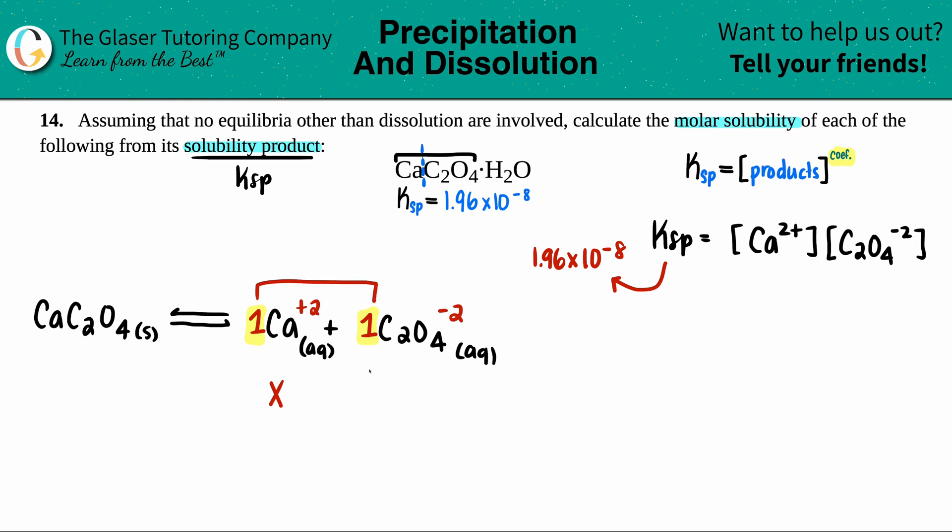And since it's a one to one ratio, that means that whatever this concentration is, it has to be the same as this. So it also would be X. And it makes sense because it just follows the coefficient when times X is itself.